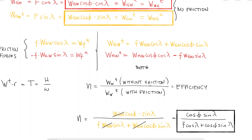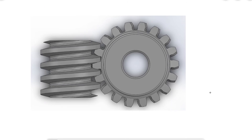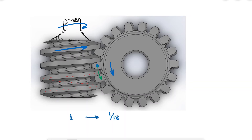At the beginning of the video I mentioned we would talk about the relationship between the number of teeth, diameter, and revolutions per minute. For a one-thread worm — equivalent to a single-threaded screw — one rotation of the worm will bring each tooth to where the adjacent tooth was. This means the gear rotated 1/18th of a turn for a gear with 18 teeth. In general, one rotation of the worm makes the gear rotate 1/N, where N is the number of teeth on the gear.